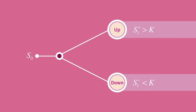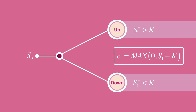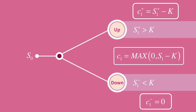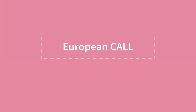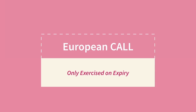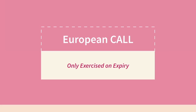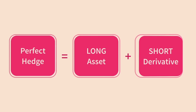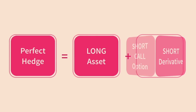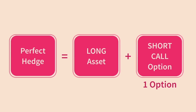The value of a call option is either zero or S1 minus K, depending on where S1 lands relative to the strike price. If the price goes up, the value of the call is S1 minus K; if the price goes down, the call value will be zero. We're going to apply this to the valuation of a European call option, which can only be exercised on the expiry date. We can create a perfectly hedged portfolio by combining a long position in an asset with a short call option.